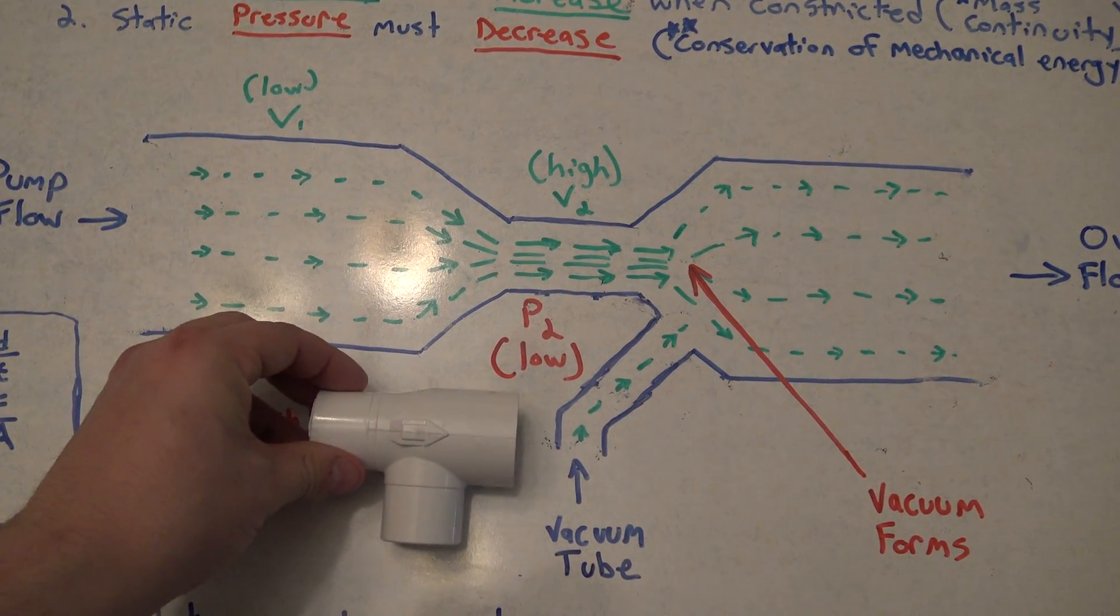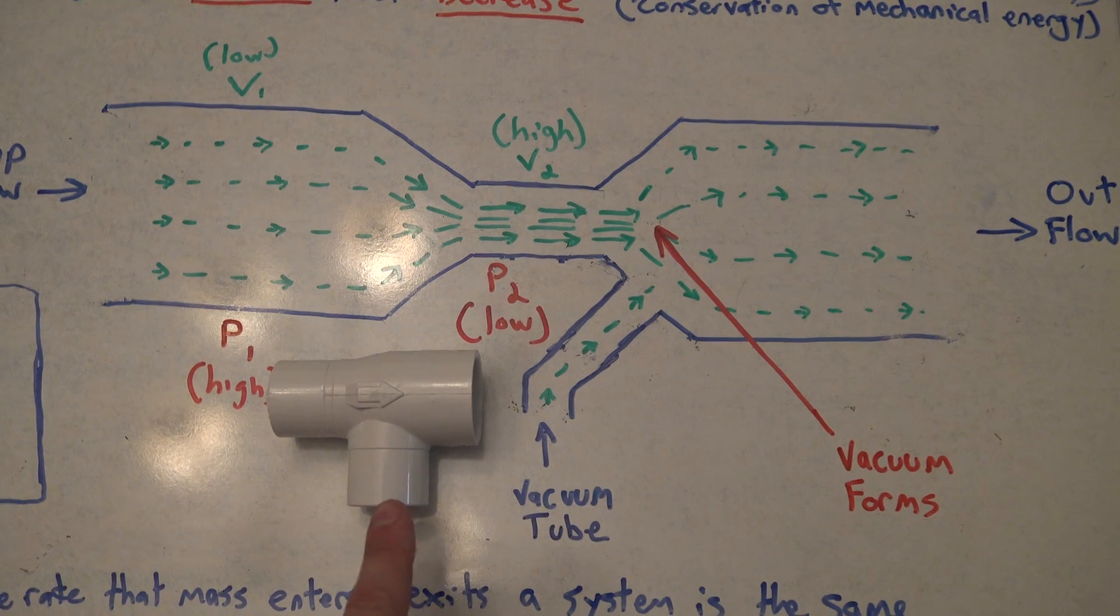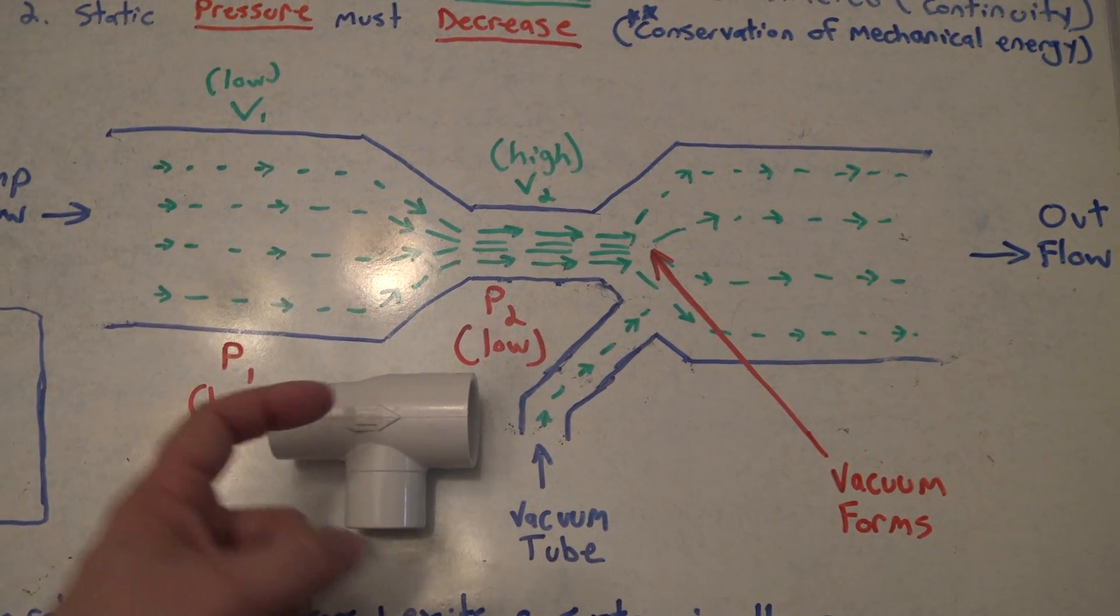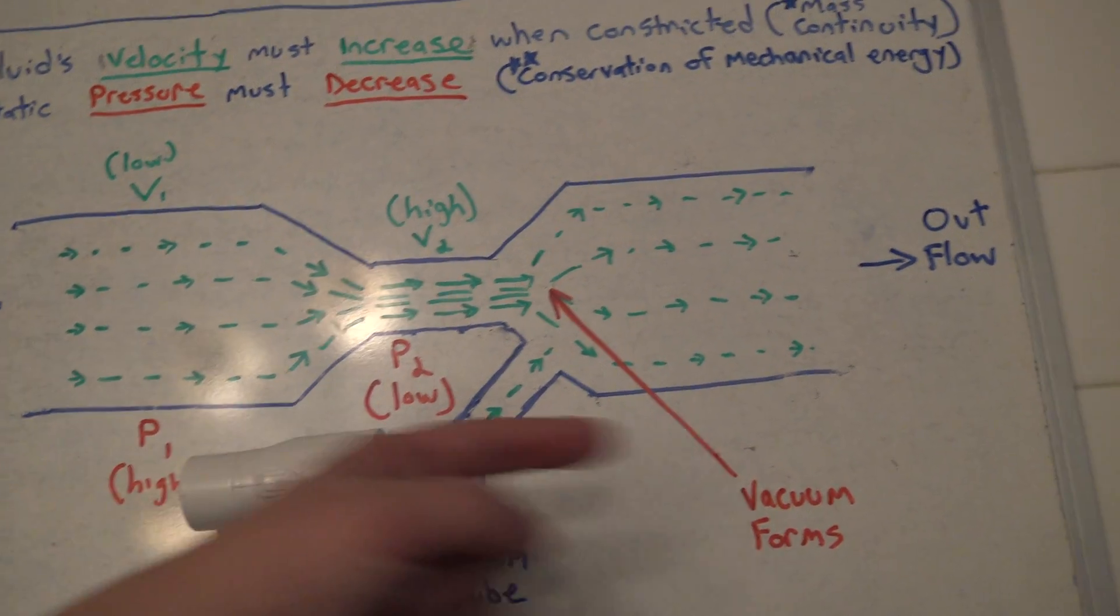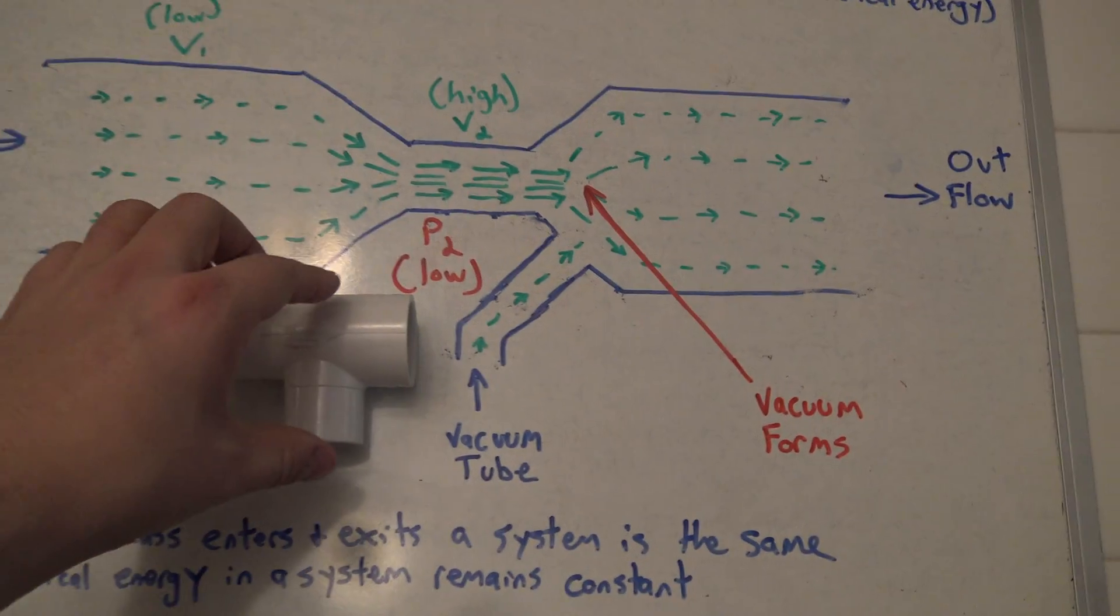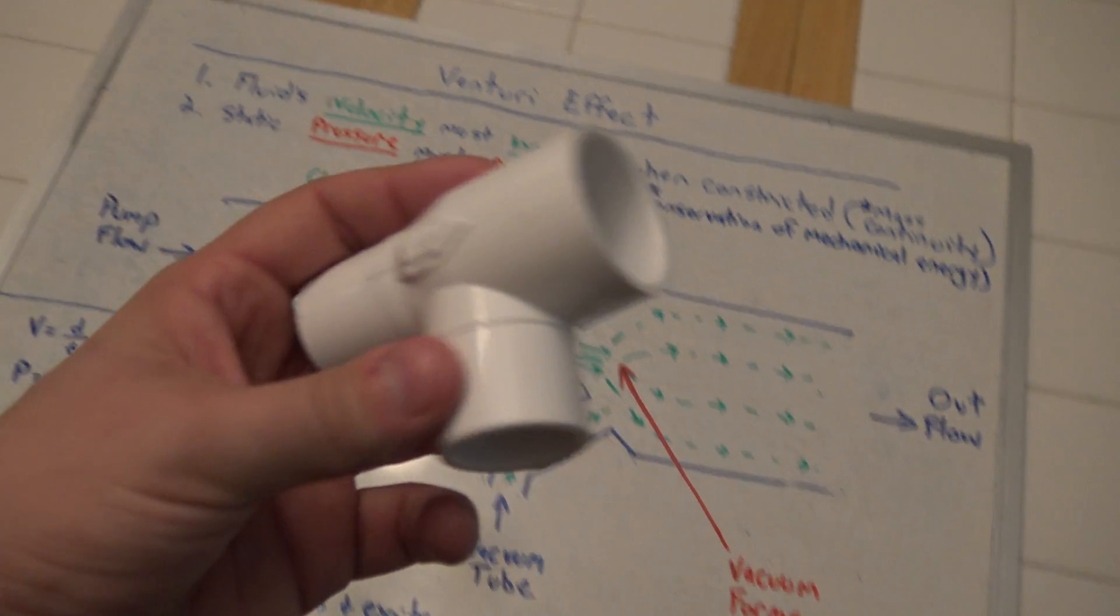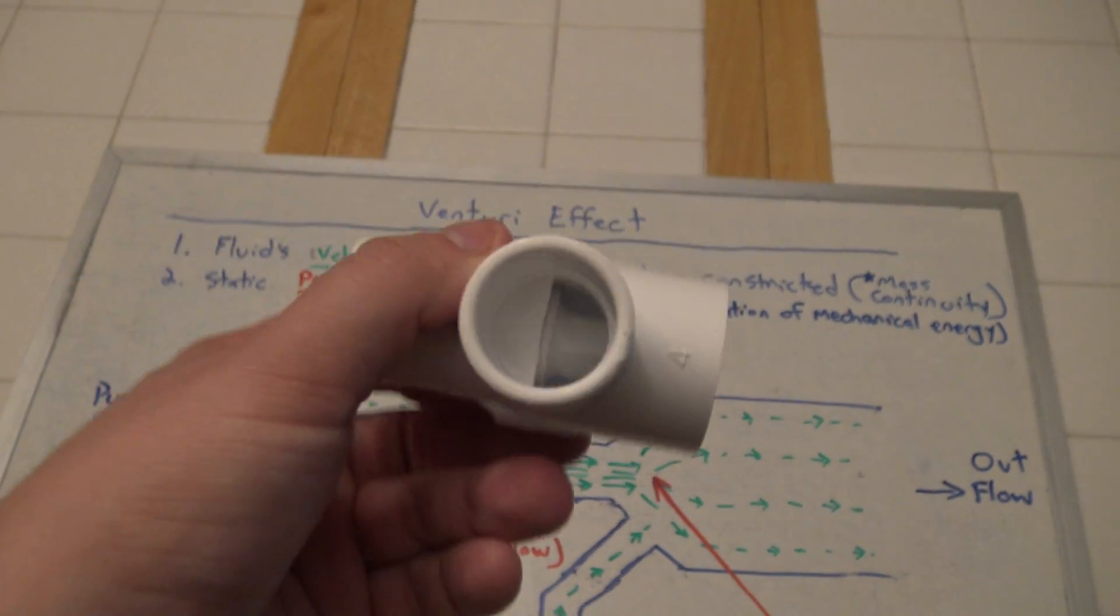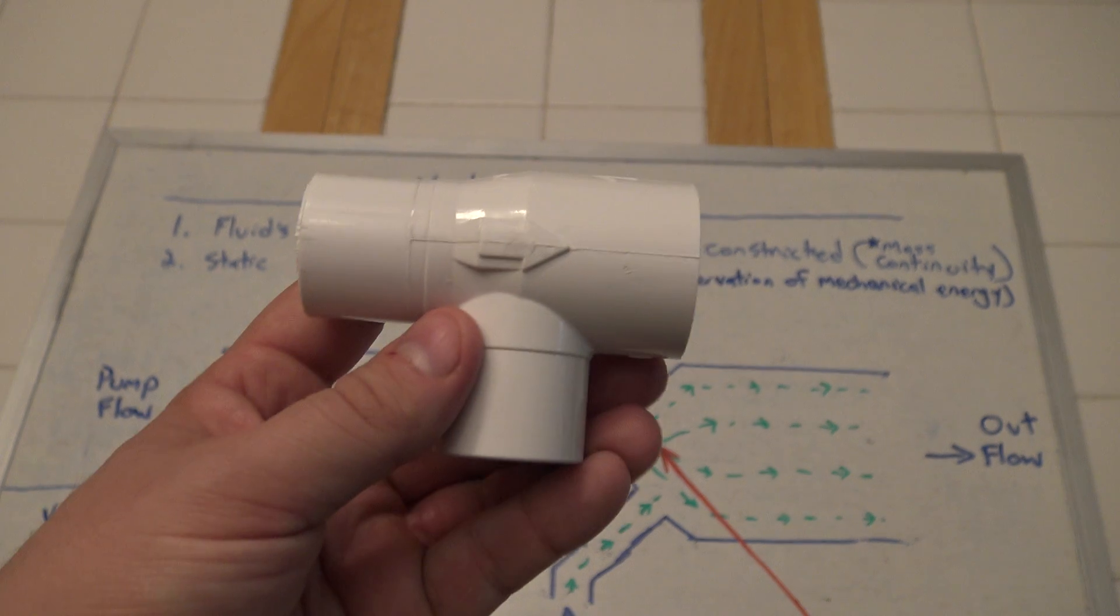And if you push water using a water pump going in this direction, just like on this diagram, what will happen is you will pull water up this vacuum tube and inject it into this system. So this little piece here is really interesting and it's going to be really fun to play around with in the aquarium and the DIY aquarium space.